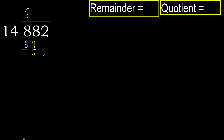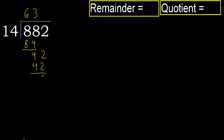Next 42. 14 multiplied by 3 is 42 — not greater. Subtract: 42 minus 42 is 0. No remainder, therefore finish.